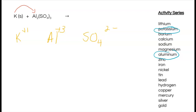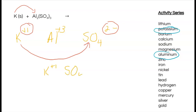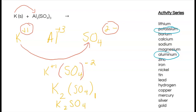Potassium bumps out aluminum and combines with sulfate, since opposite charges attract. Doing the crossover rule: potassium plus one and sulfate negative two — we place brackets around the polyatomic ion. The two crosses over to give K₂, and the one outside the bracket doesn't change what's inside, giving us K₂SO₄. Aluminum is not on the diatomic list, so it's simply written as Al.